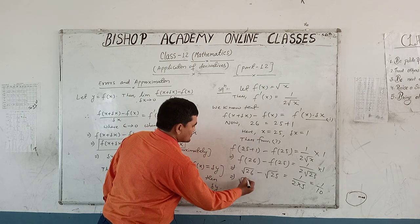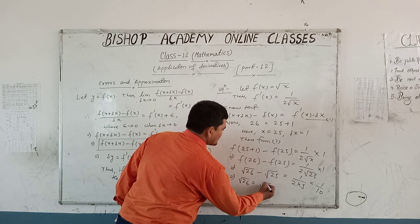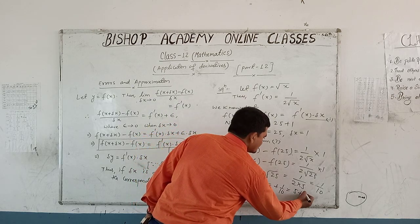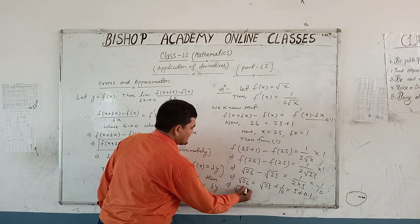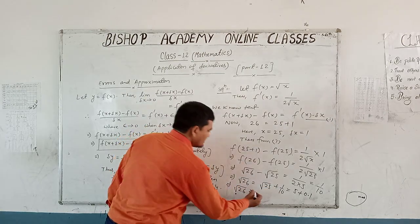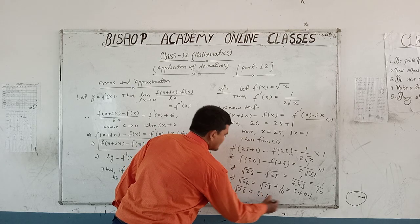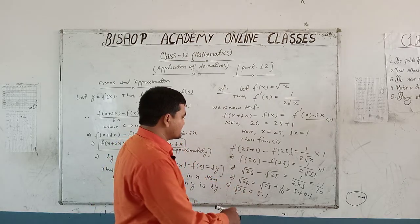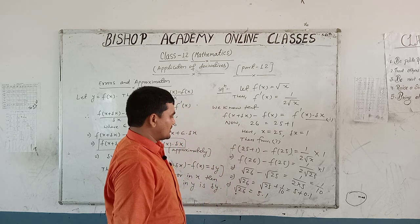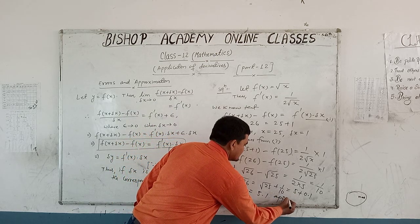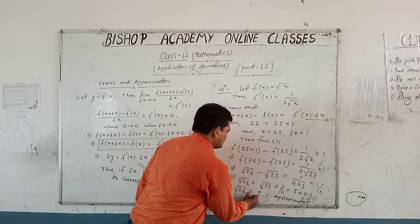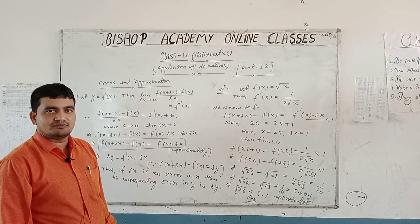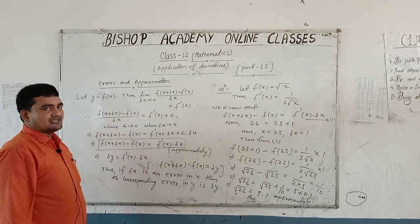This implies that root 26 equals root 25 plus 1 upon 10. Root 25 equals 5 and 1 upon 10 equals 0.1. Therefore, root 26 equals 5 plus 0.1, which equals 5.1. This is an approximate value, so we write root 26 approximately equals 5.1. This is the final answer. Some questions based on error and approximation are given in Google Classroom.